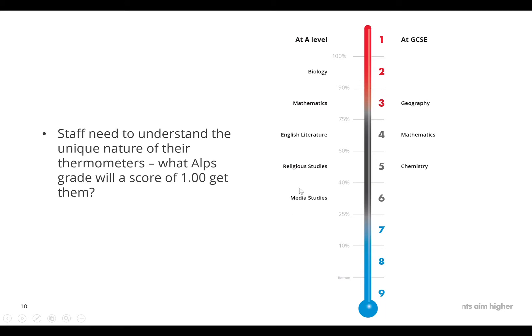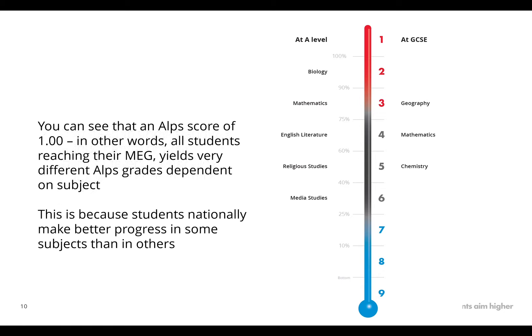But in media studies, a score of 1.00 will actually push you further down the thermometer and put you in the bottom 40%. Just be aware that is not anything to do with the level of difficulty of the subject — there are lots of factors there. That's just where the subjects are coming out on the thermometer. In other words, students getting their MEGs and where that puts you as a department depends on what your subject is, because students are making better progress in some subjects nationally than in others.